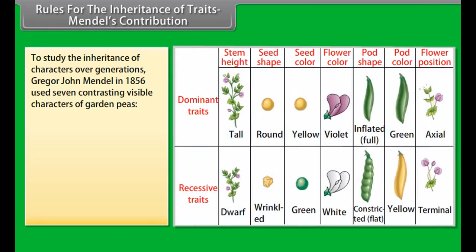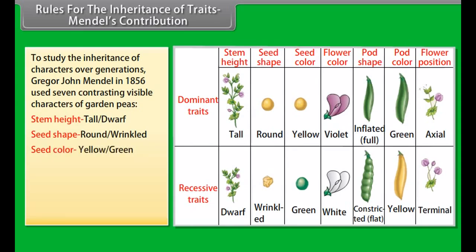Rules for the inheritance of traits — Mendel's contribution: the rules of inheritance of traits in human beings arose due to the fact that both father and mother contribute practically equal amounts of genetic material, that is DNA, to the child. Thus each trait can be influenced by both paternal and maternal traits.